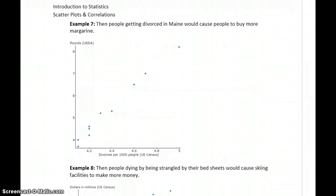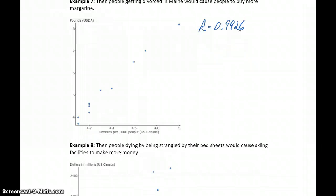If we're assuming association did imply causation, then the number of people who get divorced in Maine - divorces per 1,000 people - would be causing people to buy more margarine. In this case, we've got a very strong correlation, 0.9926. So if it was proving a cause-and-effect relationship, then the more people who get divorced in Maine, the more margarine you would have to buy as a result.